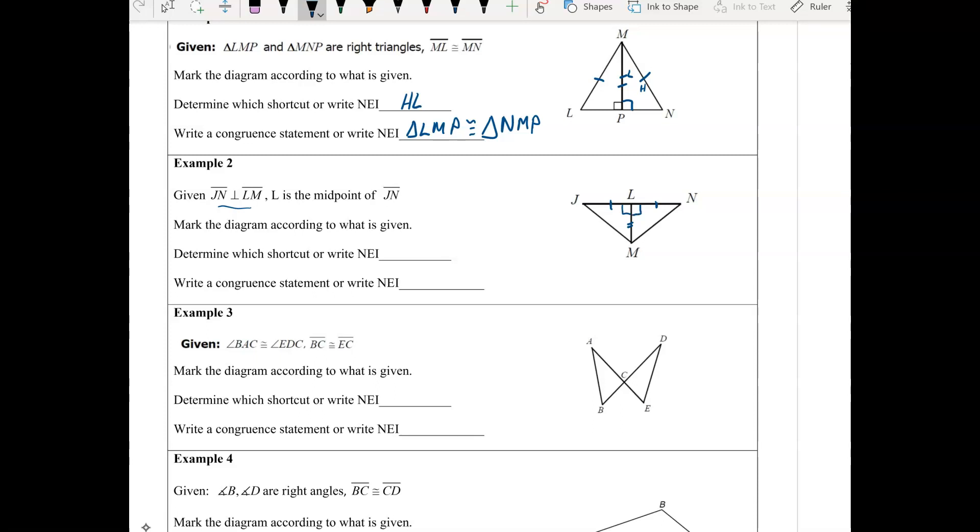So this is not HL, because this would be the hypotenuse, and it's not even marked, so what this is, is side angle side, the right angles, of course, congruent to the other right angles, side angle side. And so the congruent statement here would be the triangle JLM is congruent to triangle NLM.